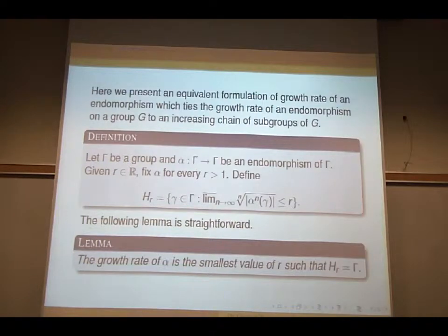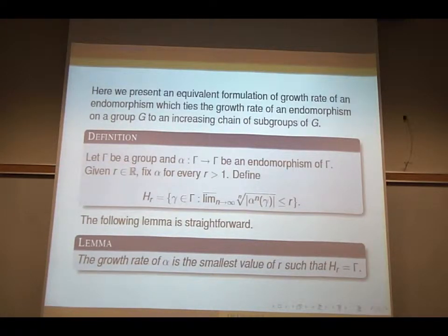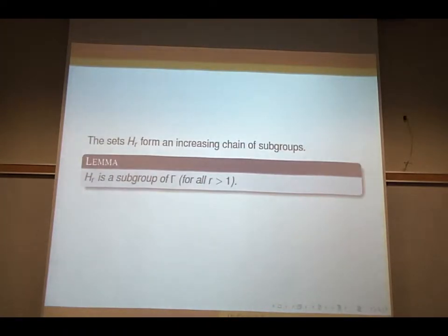So you give it R and you fix the alpha and you define this H_r and you can show that the growth rate of alpha is the smallest value R, such that this H_r is the whole gamma, so this set generates the whole thing. So the other interesting thing is that you can show, you can show that this H_r is a subgroup of gamma as well.